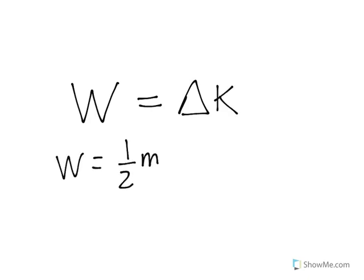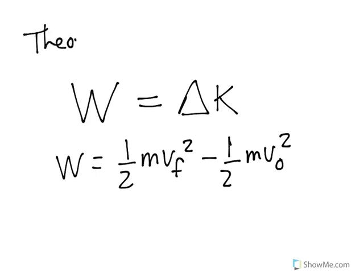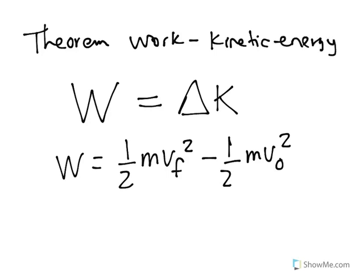There is a theorem which relates work with energy. Both of them are given in joules, and it states that whenever there is a work, it's because there is a change in kinetic energy, which means one half of mass final velocity to the square minus one half of mass initial velocity to the square. This relationship is called the theorem of work kinetic energy, which implies if I perform a work, is because there is a change in velocity.